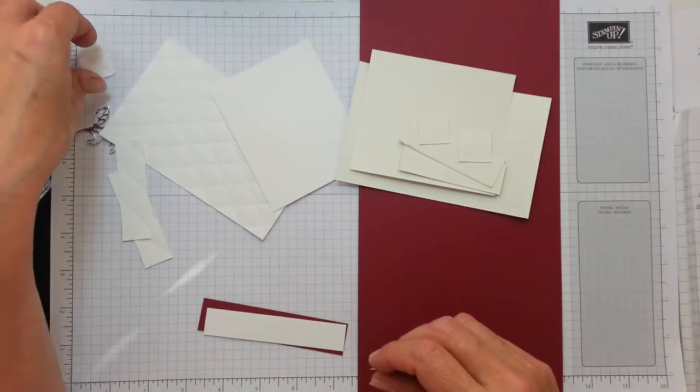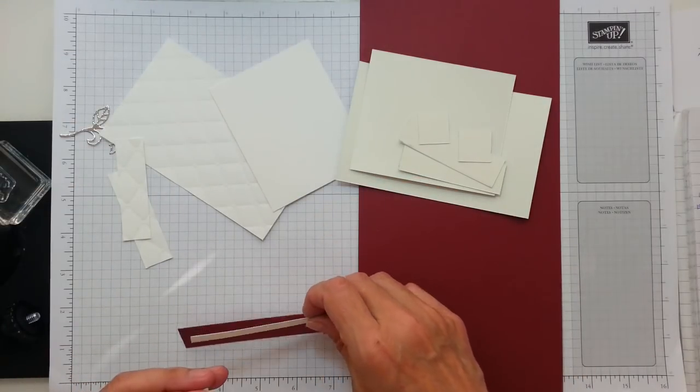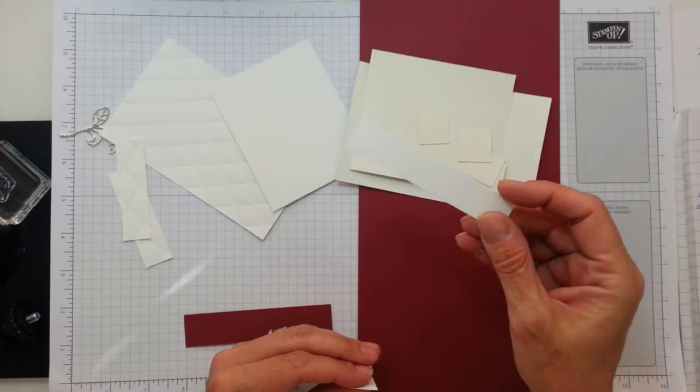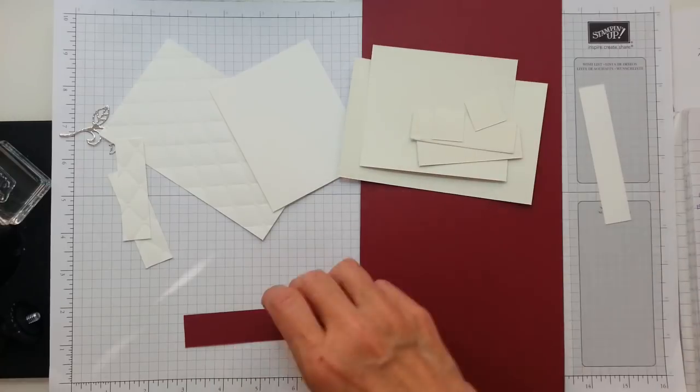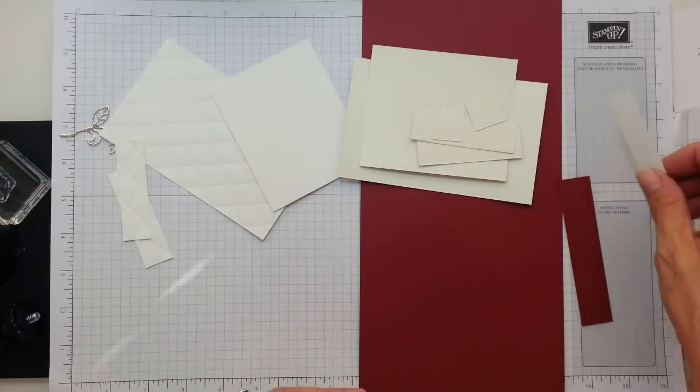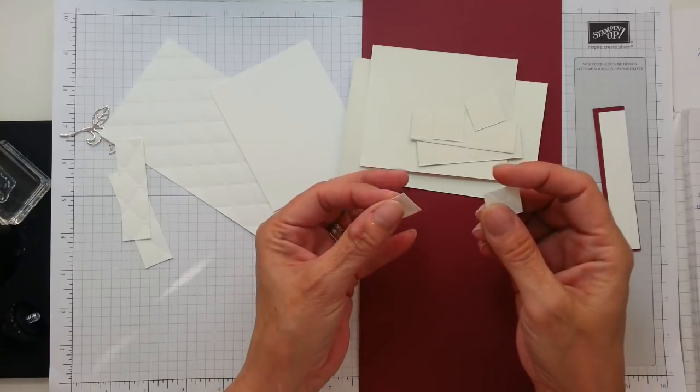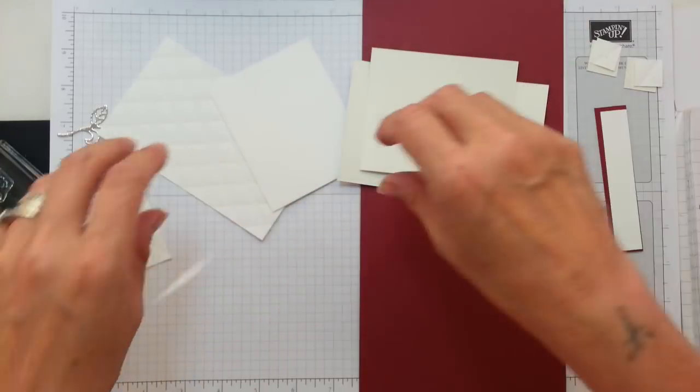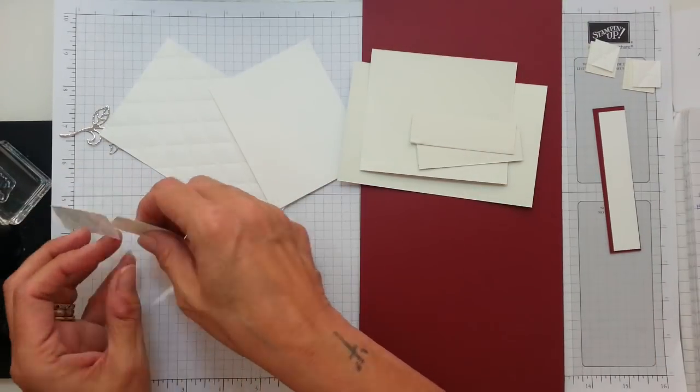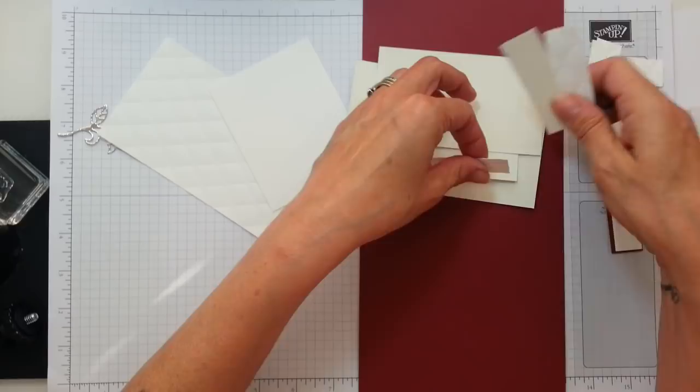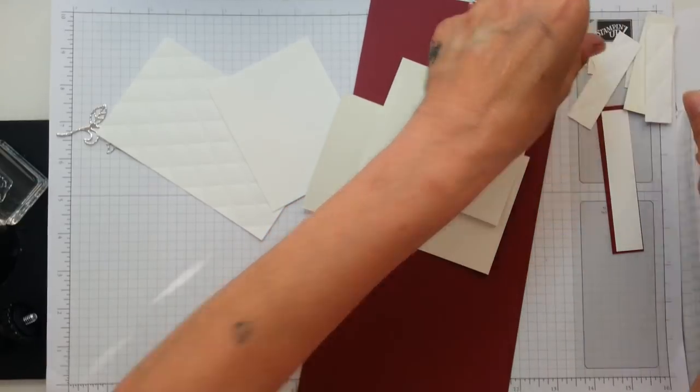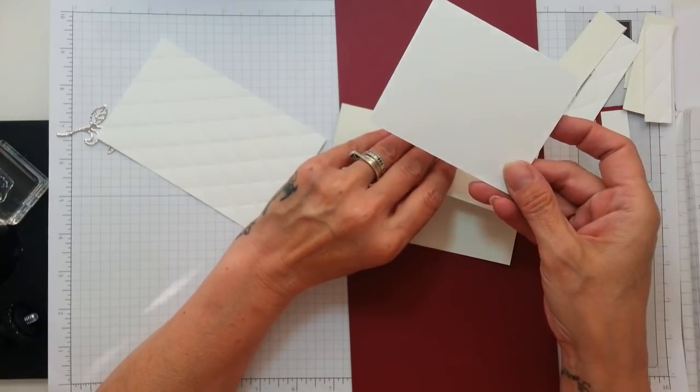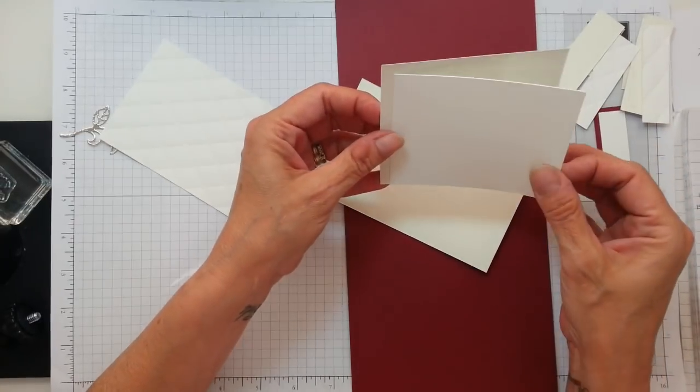Just a gorgeous, gorgeous card. So on to the Whisper White. We now need a piece that is 3/4 by 3 and 7/8. That goes with the Merry Merlot for the front. And you're going to need 2 pieces at 3/4 by 3/4 and there for there. You're going to need 2 pieces which are 3/4 by 2 and 3/4 and there for there.